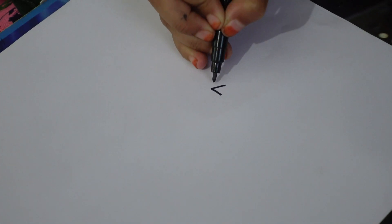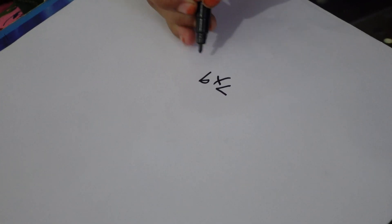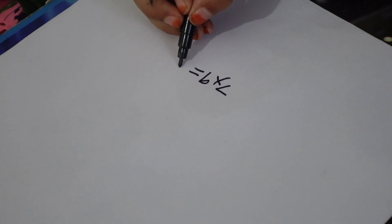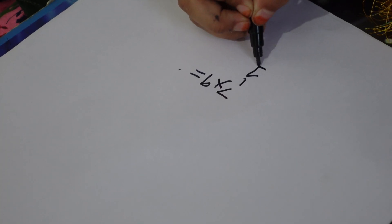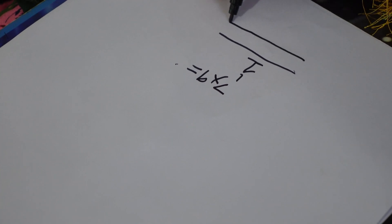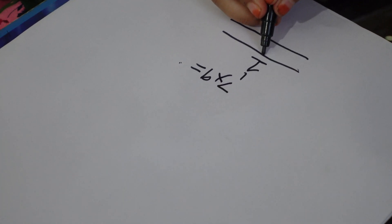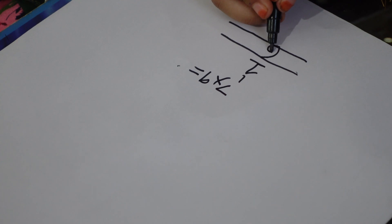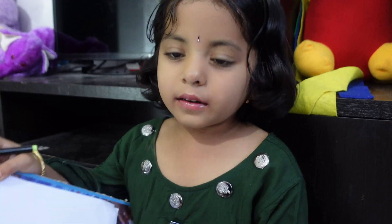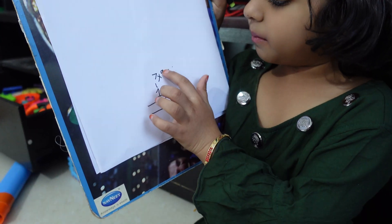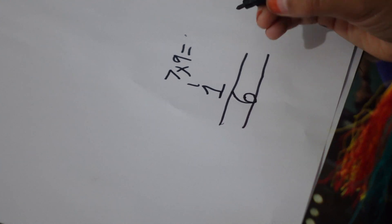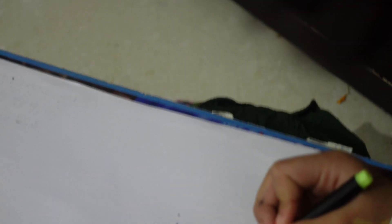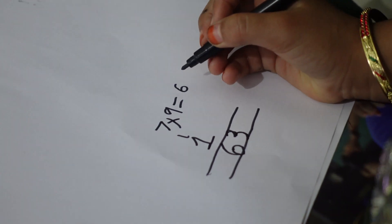7 into 9: subtract 1 from 7 to get 6. Every time subtract 1. Now subtract this number from 9: 9 minus 6 is equal to 3. Now the answer is 63.